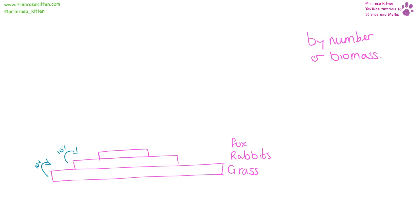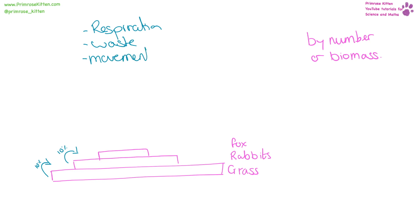As we jump between trophic levels, roughly 10% of energy is transferred from one to the other. It is going to be lost in a number of different ways: respiration, waste such as urea and faeces, and movement — running around, jumping, doing normal animal things.